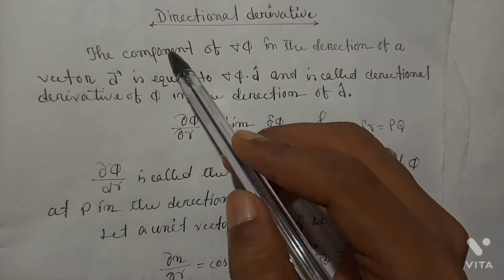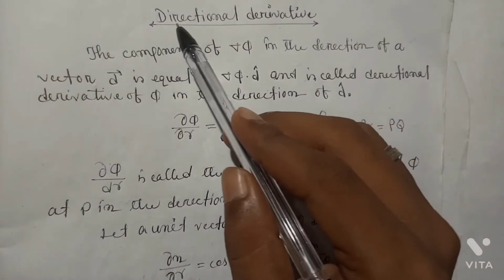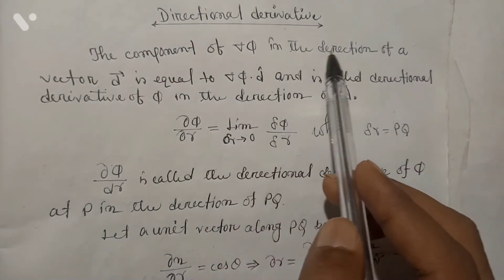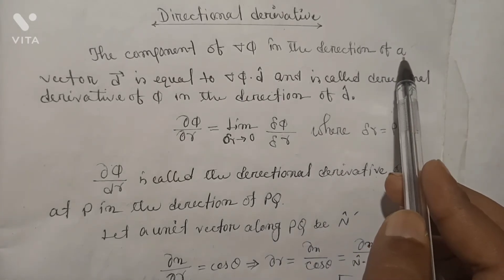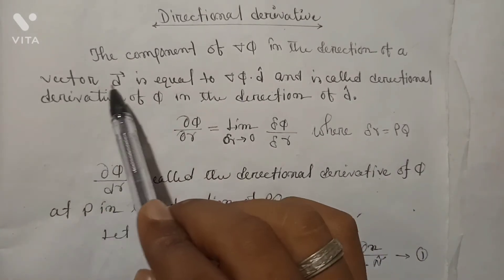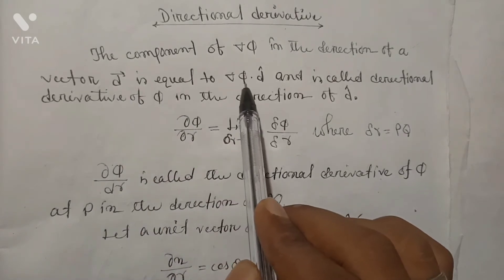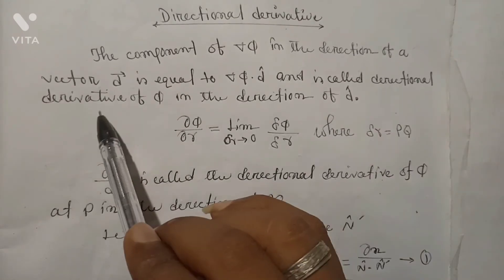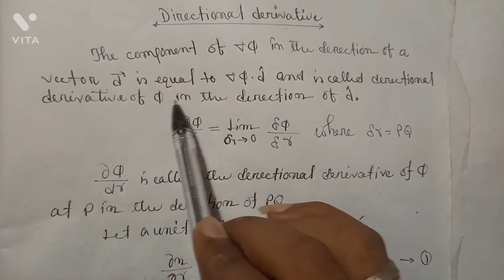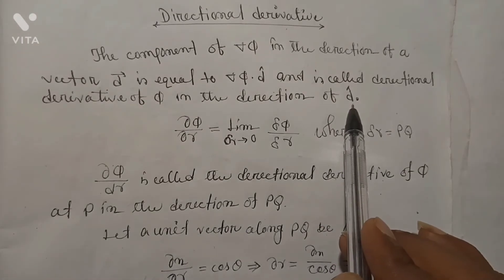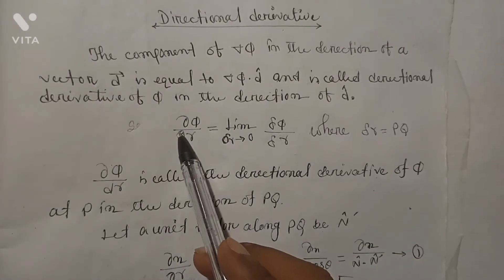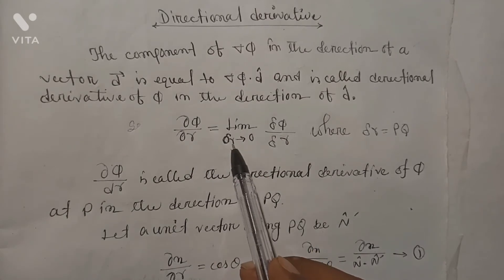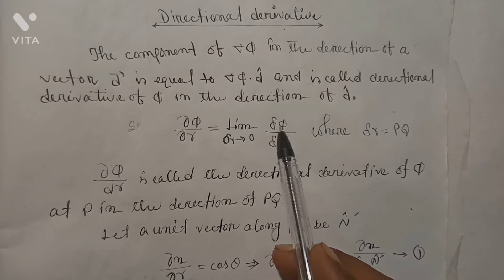Now we will discuss directional derivative. The component of ∇φ in the direction of a vector d is equal to ∇φ · d̂ and is called directional derivative of φ in the direction of d̂. So ∂φ/∂r = lim(Δr→0) Δφ/Δr.